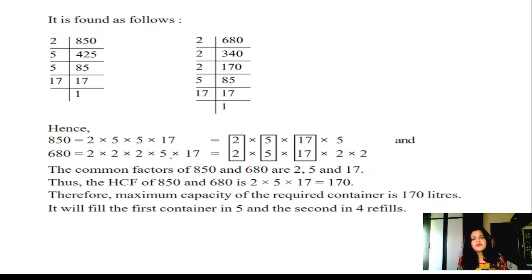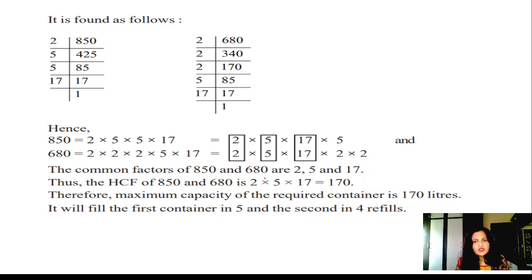We have to find the HCF. The common factors are 2, 5, and 17. So the HCF of these two numbers is 2 × 5 × 17. We get 170 — that is, 2 × 5 = 10, and 10 × 17 = 170. So 170 is the capacity of the small container.